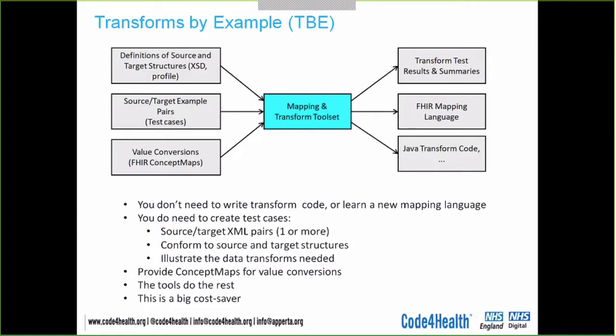Both the source and the target must conform to the required data structures and must illustrate what your transform has to do. Basically, if you provide test cases which illustrate the source and the target, then the tools will do the rest — they will actually generate the transform for you, and they will provide you with the transform in several different forms, including in FHIR mapping language. An alternative form is Java. So this way of developing transforms can be a really big cost saver.